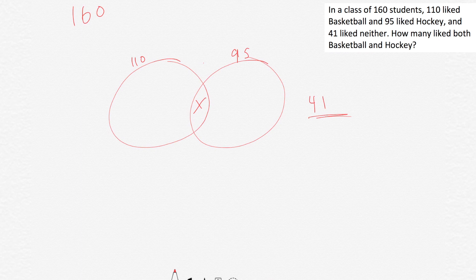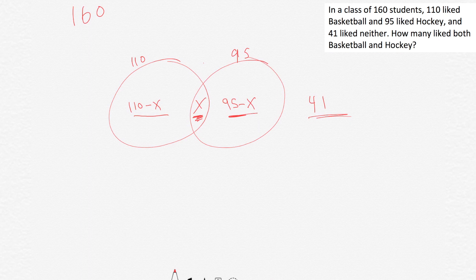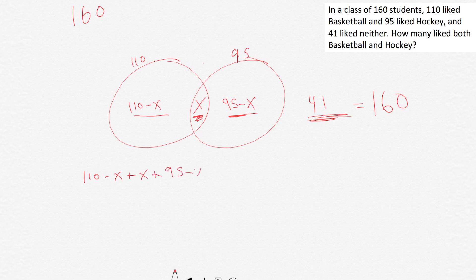Here's another way to approach it. The basketball-only region is 110 minus X. The hockey-only region is 95 minus X. The overlap is X. The neither group is 41. Total is 160. So: (110 minus X) plus X plus (95 minus X) plus 41 equals 160.